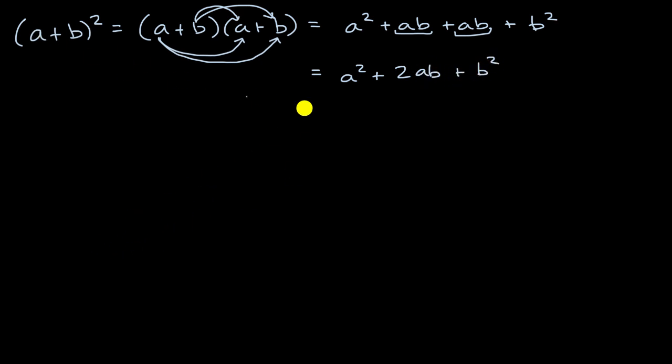Now, why did I go through this review? Well, now we can use this idea that a plus b squared is equal to a squared plus 2ab plus b squared to tackle things that at least look a little bit more involved. So if I were to ask you, what is 5x to the sixth plus 4 squared? Pause this video and try to figure it out, and try to keep this and this in mind.